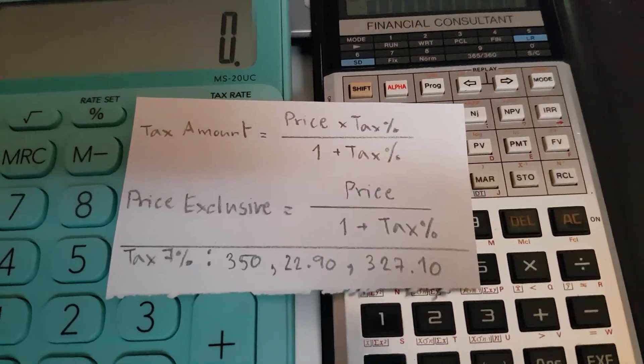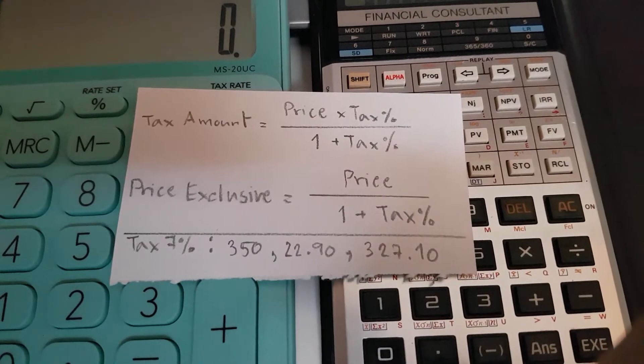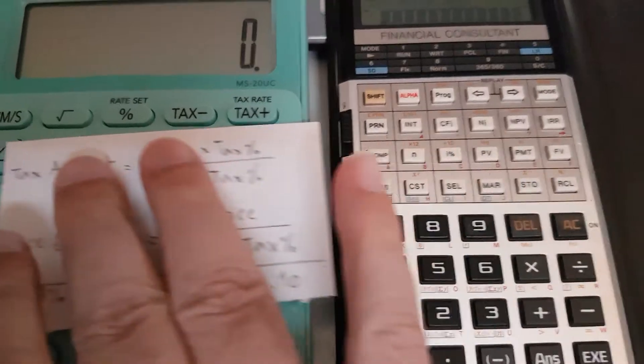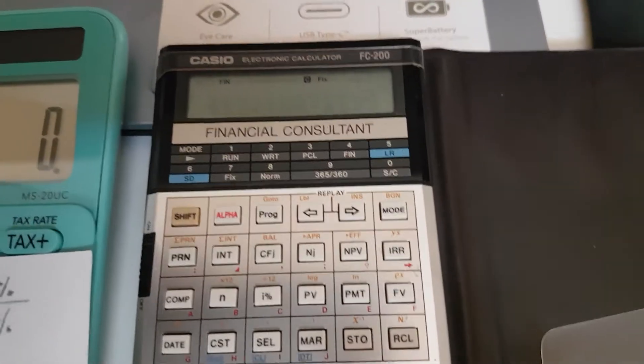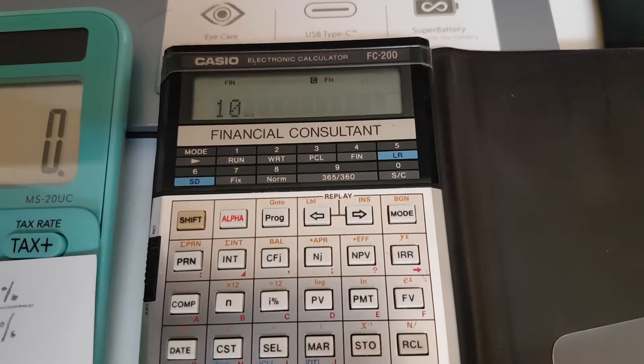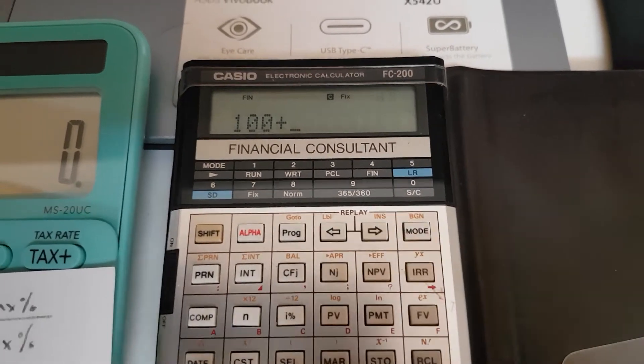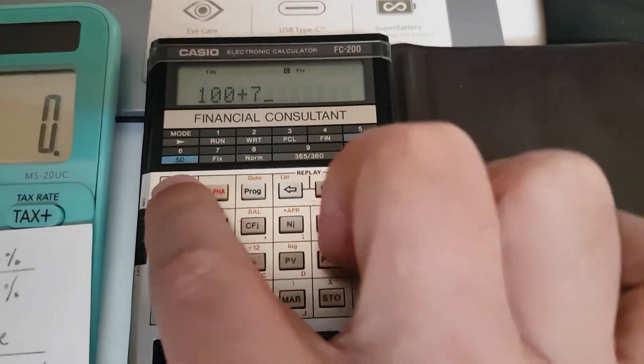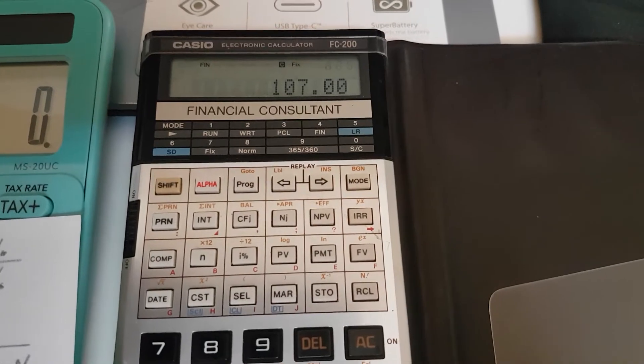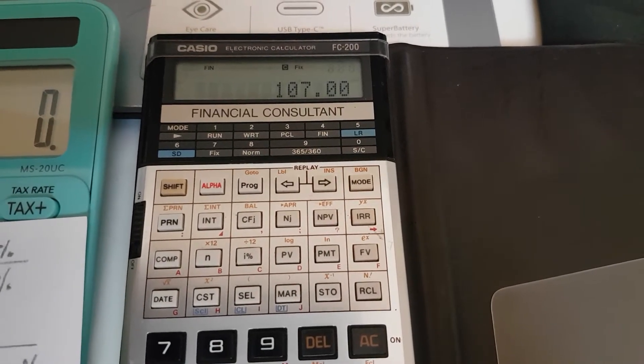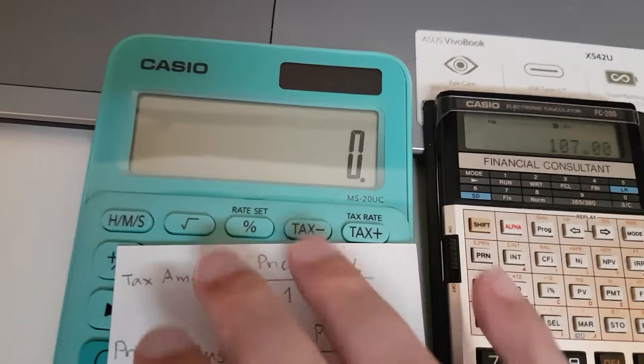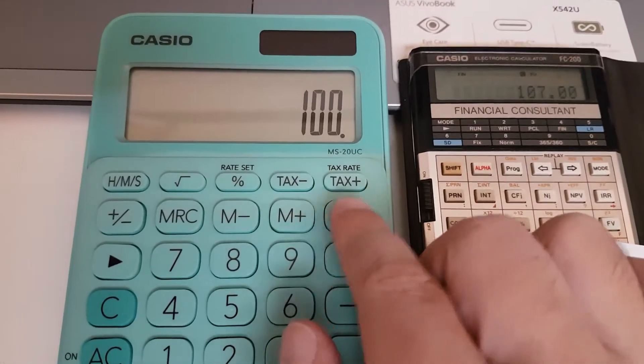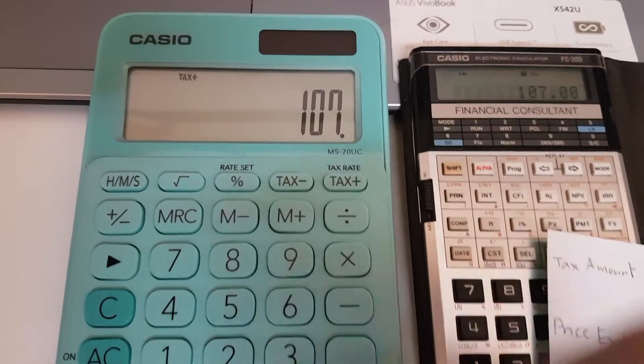When you subtract tax, it's not the same as adding tax procedure. For example, when you want to add 100 plus 7 percent, that's going to be 107. The tax amount is 7. Same here, 100 and then tax plus you get 107.